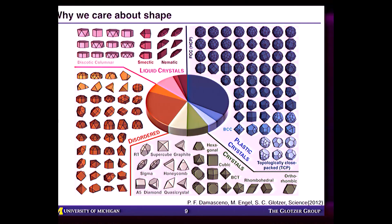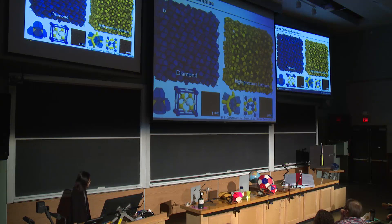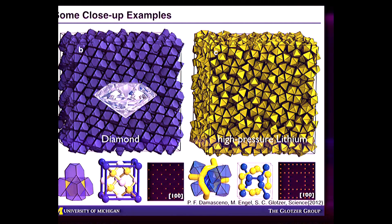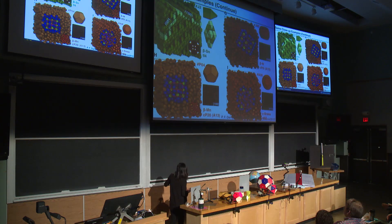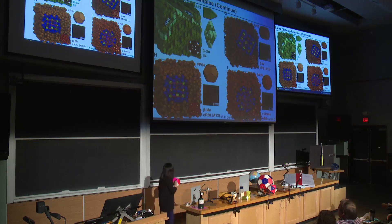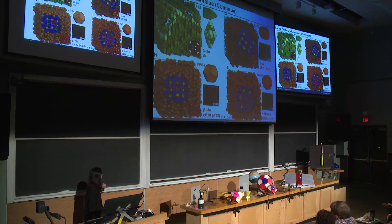We can do all of this very freely in a computer. In a study in our group in 2012, we looked at 145 shapes and studied what kind of structure they will form. Here are some close-up examples. On the left you have diamonds — exactly the same structure that carbon forms, but instead of carbon atoms we have a slightly truncated octahedron as the building block. There's another shape that will form a structure similar to lithium. The shape in the corner is called a rhombus dodecahedron — I have one here — and it actually forms the same structure as the material magnesium. So these are all just a bunch of different shapes that form different structures.